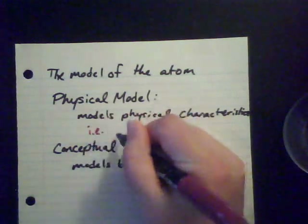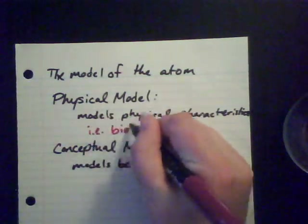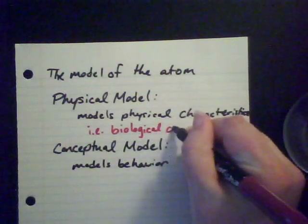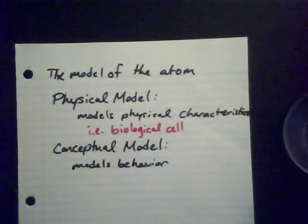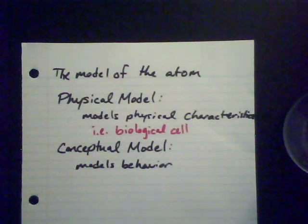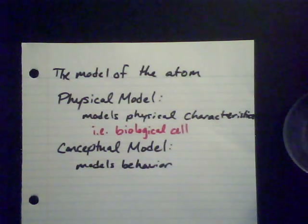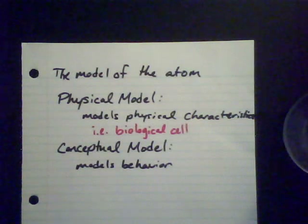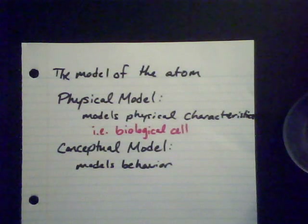A physical model models physical characteristics about something. For example, you might model a biological cell — you've probably seen this in your natural science or physical science courses. You might have a large cell with a nucleus, a Golgi apparatus, endoplasmic reticulum, ribosomes, and all these things you can take out and see all the different bits and pieces of the biological cell. So that's a physical model — you're physically modeling the way that something looks.